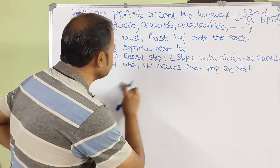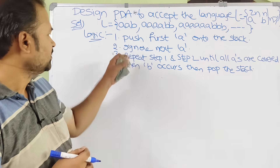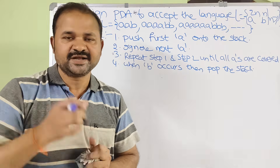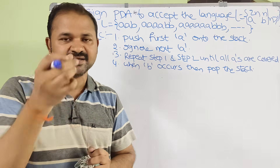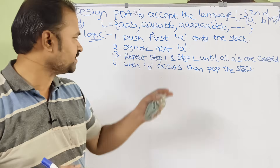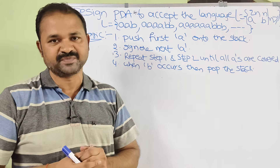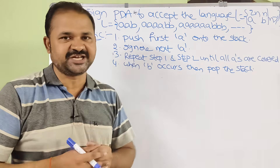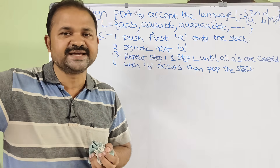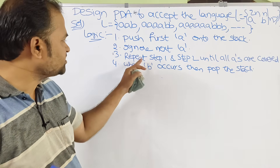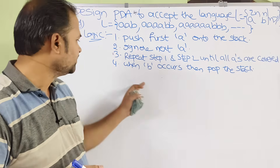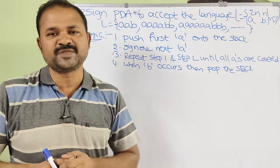The logic is very simple. Step 1: push the 1st A onto the stack — that is, push the 1st, 3rd, 5th, 7th, 9th A (odd-numbered A's). Step 2: ignore the next (even-numbered) A — the 2nd, 4th, 6th A, and so on. Step 3: repeat steps 1 and 2 until all A's are covered. When B occurs, pop the stack.